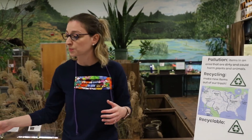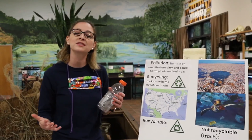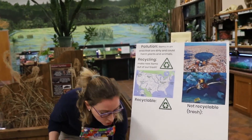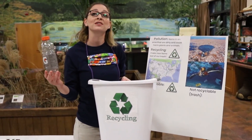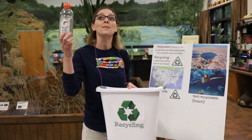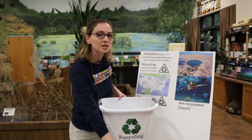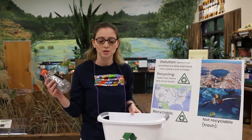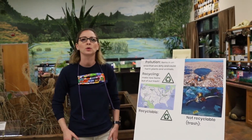Recycling is a way that we can stop pollution, because we stop making the trash in the first place. Recycling is when we make new items out of some of our trash. This plastic bottle, instead of throwing it in the trash, if we put it in a recycling bin it goes to a recycling facility where they break it down and make new things out of it. That's good because it doesn't sit in a landfill and it doesn't hurt plants and animals.